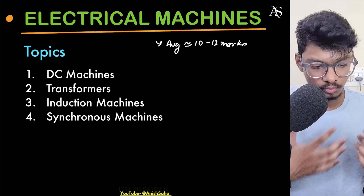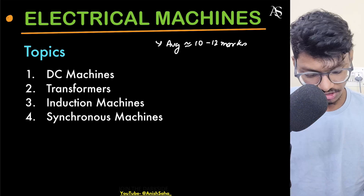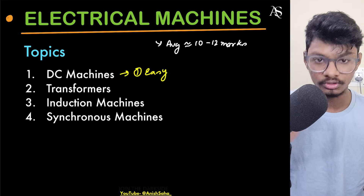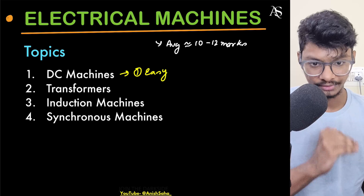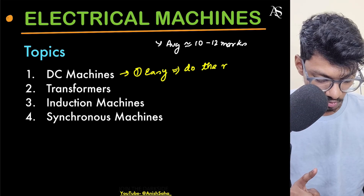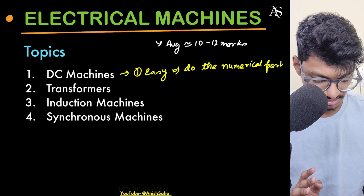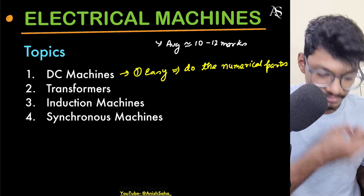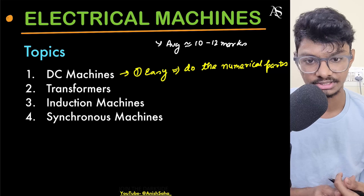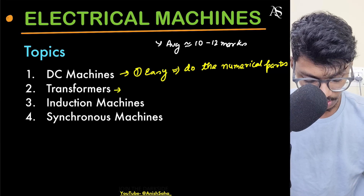DC machines are very easy, so give them the first priority. Practice more and more numericals on DC machines — they are simple if you know the basics. The theory part you can sometimes skip, but if you are comfortable with the numericals you will be able to answer all questions from the DC machines topic.